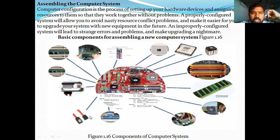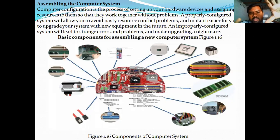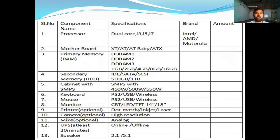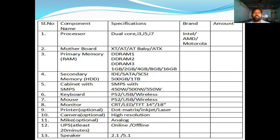These are the components gathered on a motherboard for the assembly system. The components needed are: processor, motherboard, primary memory, secondary memory, cabinet, keyboard, mouse, monitor, printer, camera, and mic.